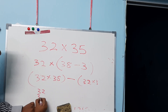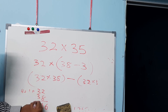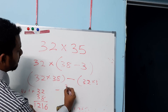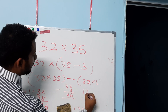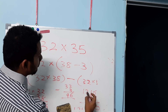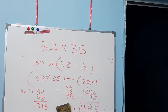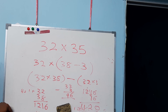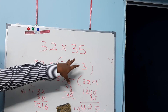Applying the rule to 32 times 38: right side gives 16, add 1, and 4 times 3 is 12 — giving 1216. Then subtract the leftover: 32 times 3 is 96. So 1216 minus 96 equals 1120.